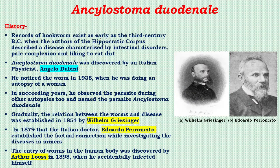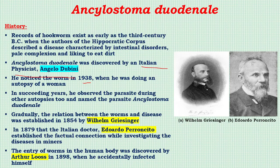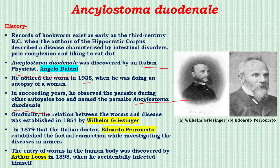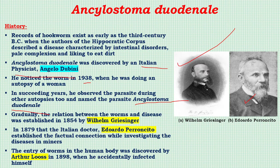Regarding history, this parasite was discovered by Italian physicist Angelo Dubini, who observed it during autopsy and named it Ankylostoma duodenale. The relationship between the disease and the worm was established by Wilhelm Griesinger and Italian doctor Eduardo Perroncito, who established the factual connection while investigating diseases in miners. Entry of the worm into the human body was discovered by Arthur Looss.